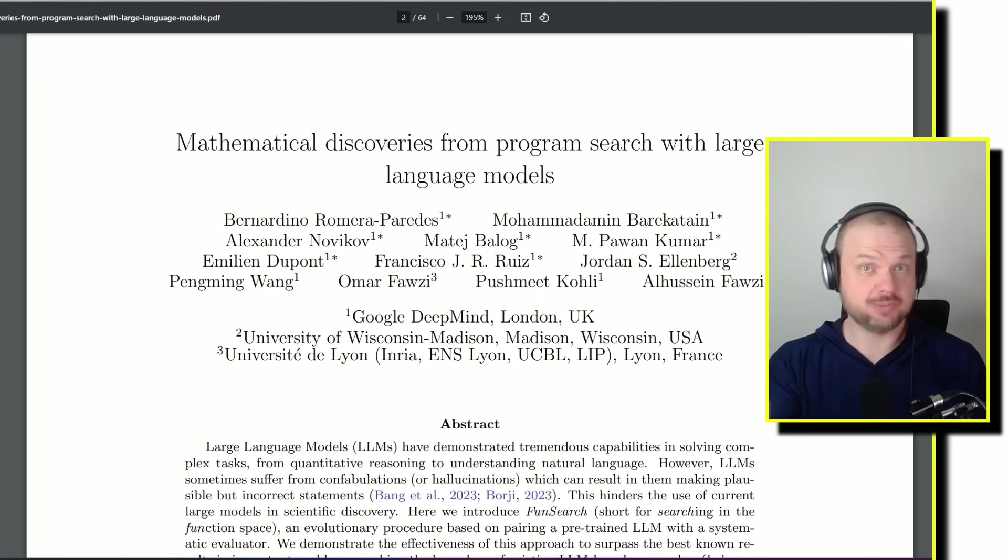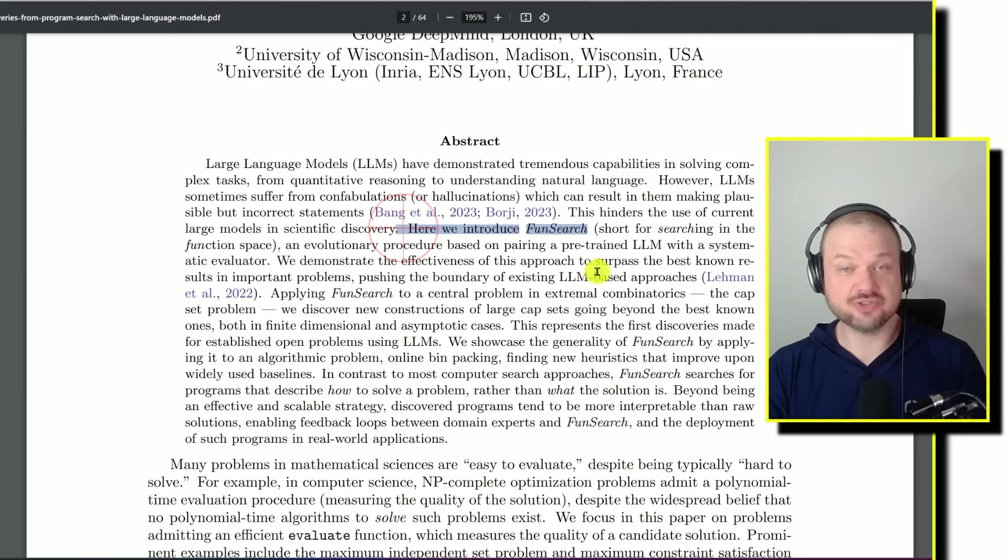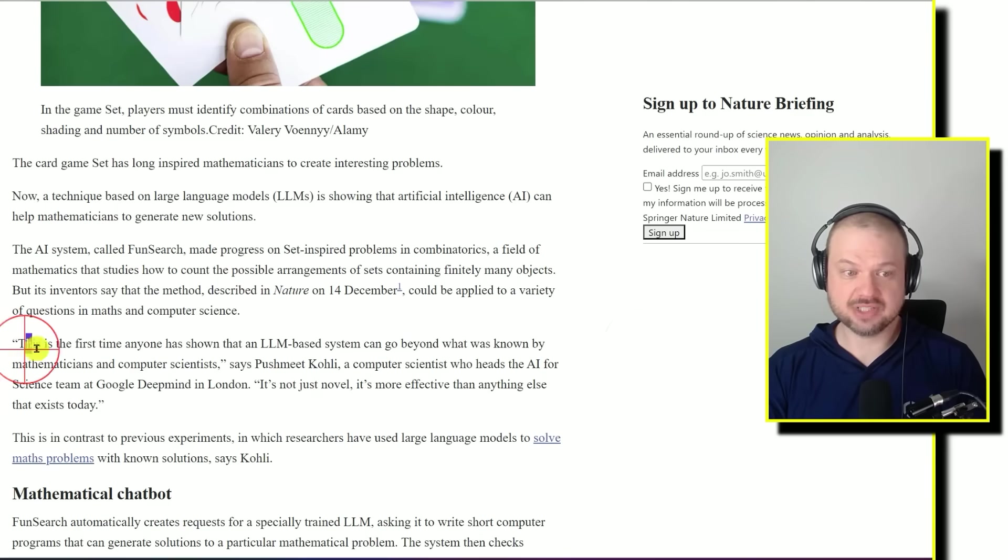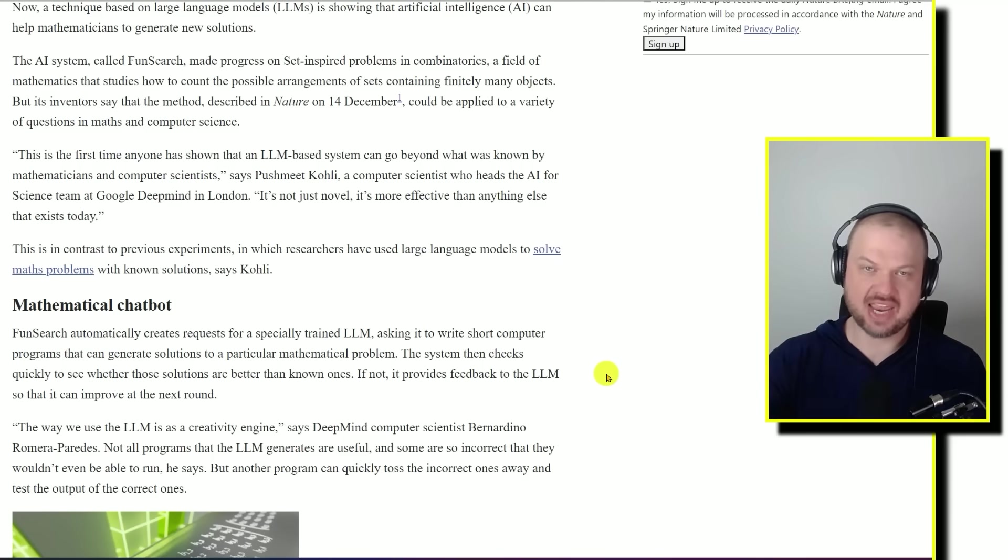Google DeepMind drops this paper, Mathematical Discoveries from Program Search with Large Language Models. And here they introduce FunSearch, which actually stands for searching in the function space. There's a paper in Nature that goes over it. The big headline news here is this is the first time anyone has shown that an LLM-based system can go beyond what was known by mathematicians and computer scientists. It's not just novel, it's more effective than anything else that exists today.